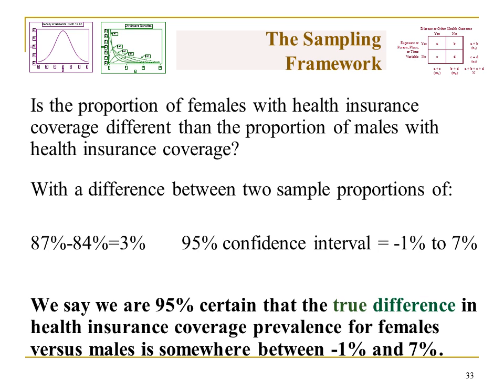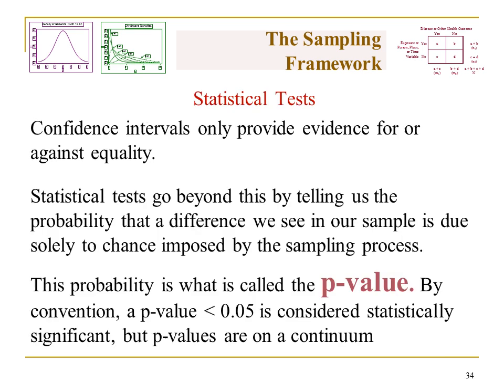That's a good segue because I already jumped into talking about p-values. Confidence intervals only provide evidence for or against equality — since zero was in the estimate, we had some evidence for equality of the prevalence estimates for health insurance for men and women. But statistical tests actually go beyond this by telling us the exact probability that a difference we see in our sample is due solely to chance imposed by the sampling process — the probability that the sample we took was not representative of the population. This probability is called the p-value. By convention, we use a p-value of less than 0.05 for statistical significance, but it's important to recognize that p-values are a continuous variable on a continuum — we're falsely dichotomizing at 0.05.